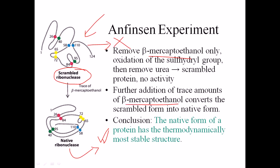Another important point here is that the native form of the protein has the thermodynamically most stable structure. Even if you produce a structure very close to the native conformation — 99% similar — the protein still wants to reach its native state. It's always a journey for the protein to go from the scrambled or unfolded state to the native state where it belongs, because the native state is the most thermodynamically favorable structure.